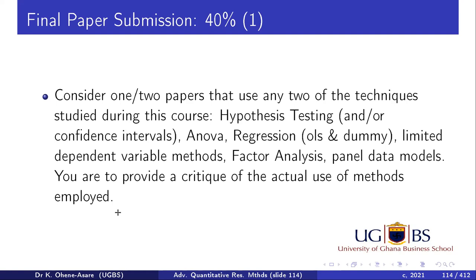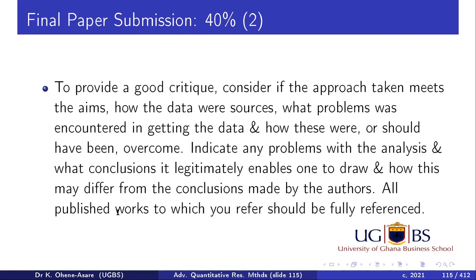You pick a paper using two of the techniques. If you can't get one paper using two techniques, get two papers using one each. What are you supposed to do? Criticize the paper — criticize the methodology. To provide a good critique, first look at the approach taken, whether the method meets the aims, how the data was collected, what problems were encountered, how the author handled these, and any problems with the analysis.